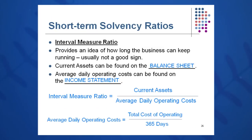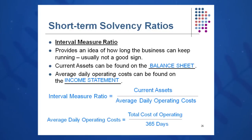The interval measure is an interesting, somewhat scary ratio — it looks at how long the business can keep running, and it's usually not a good sign. It's current assets divided by average daily operating cost. Current assets come from the balance sheet; average daily operating cost comes from the income statement, by taking total operating cost divided by 365. If you're looking at this ratio, you're probably looking at how long your company can survive. I'd have my resume ready if asked to calculate this. The ones we want to emphasize in this group are current ratio and quick ratio.